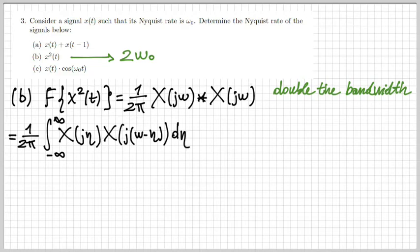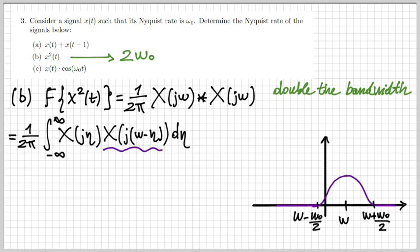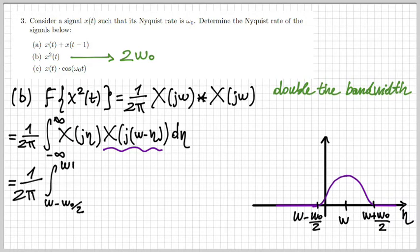I write the convolution by its definition: the integral of X(jη) · X(j(ω−η)) dη. Solving this graphically, I represent X(j(ω−η)) — the variable is η — so the signal is mirrored and shifted by quantity ω. Because the original spectrum was non-zero between −ω₀/2 and +ω₀/2, the shifted version is non-zero between ω−ω₀/2 and ω+ω₀/2.